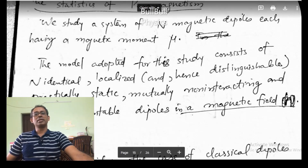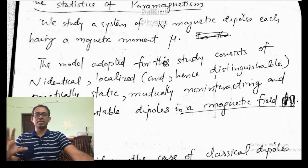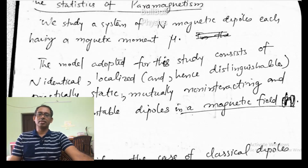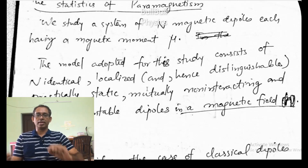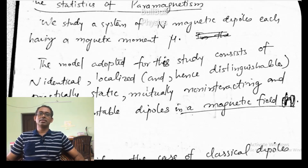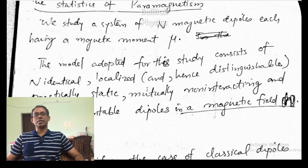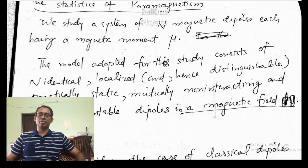These N magnetic dipoles are identical and they are localized. These magnetic dipoles may be considered on a lattice, which are not movable. The only thing they can do is orient — the magnetic dipole moment can orient in different directions with respect to the applied magnetic field.